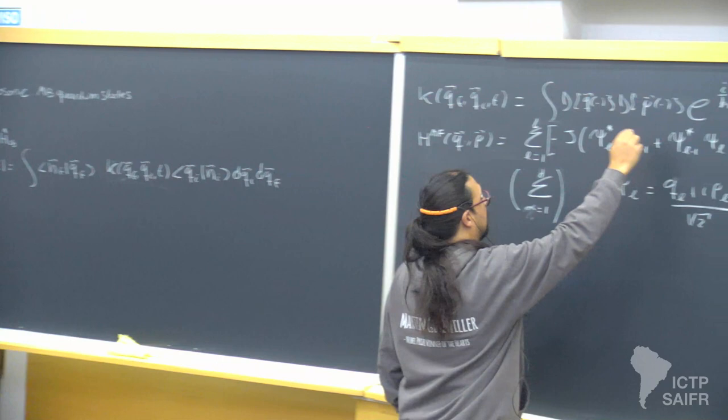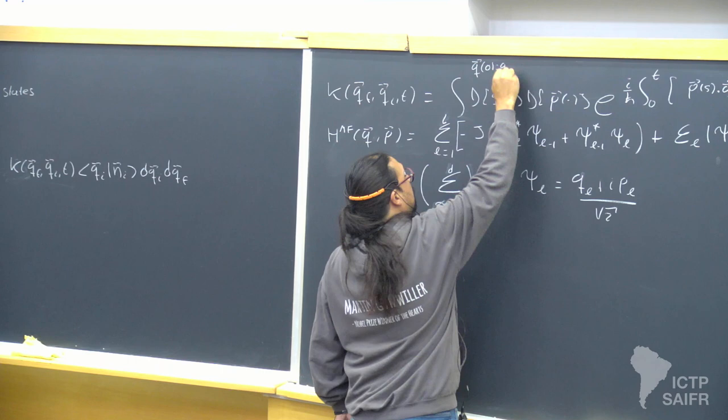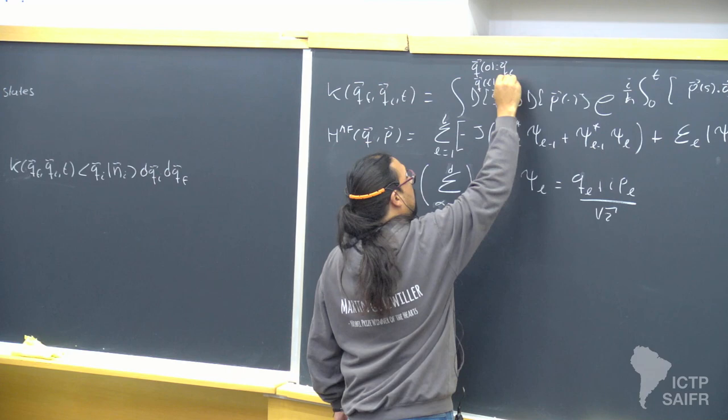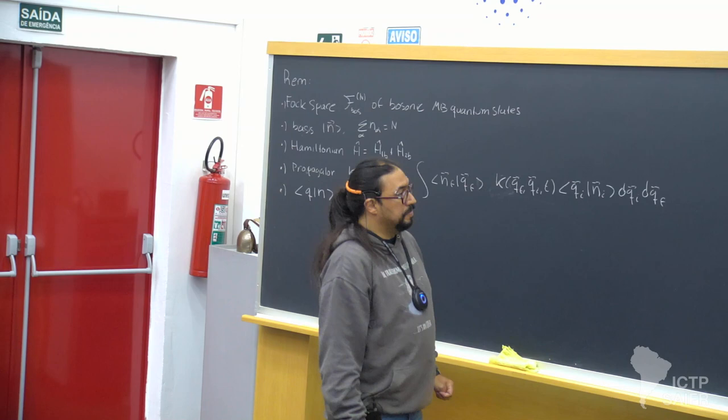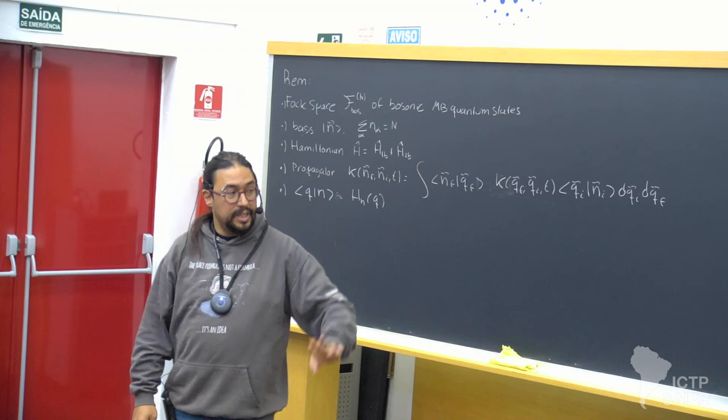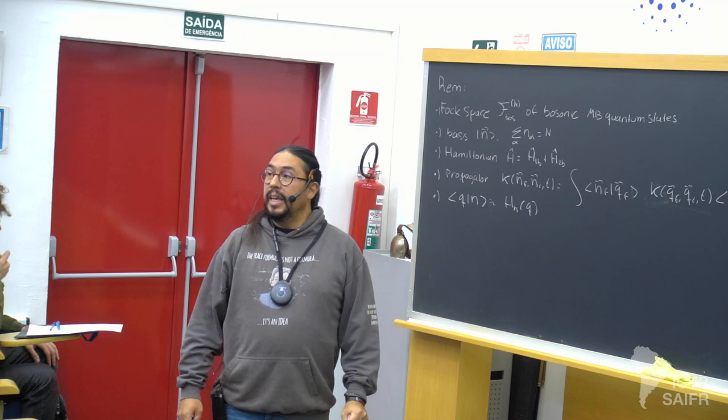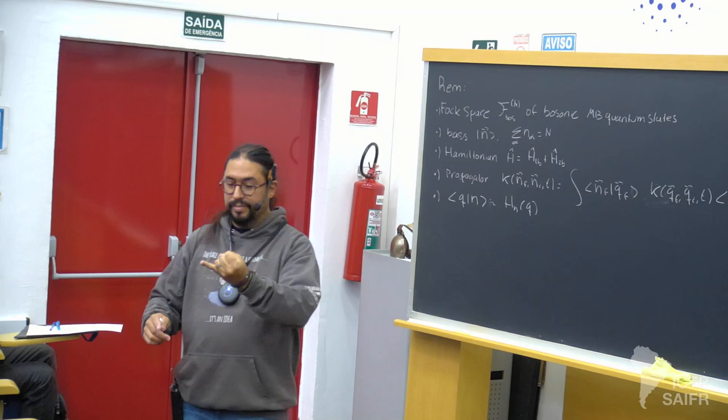The classical Hamiltonian expressed in Q and P is our classical Hamiltonian. The boundary conditions are: Q at time zero equals Q_initial, Q at time T equals Q_final, and no boundary conditions on the P paths. This is where we were yesterday — this is the path integral, with no semi-classical approximation yet.